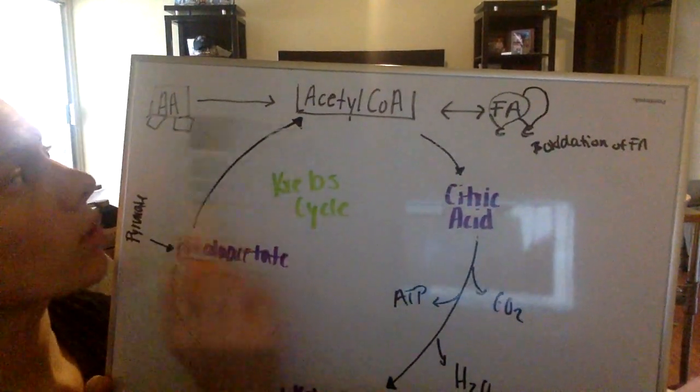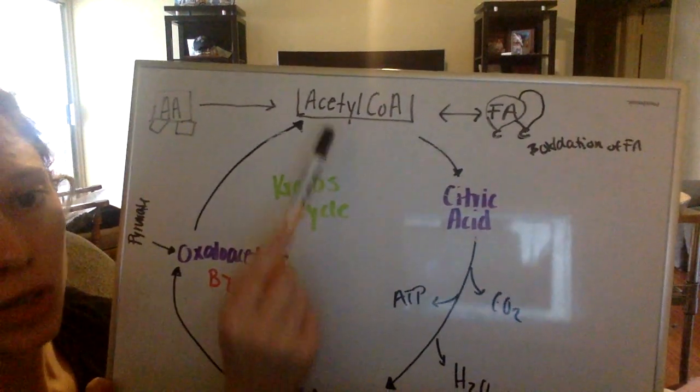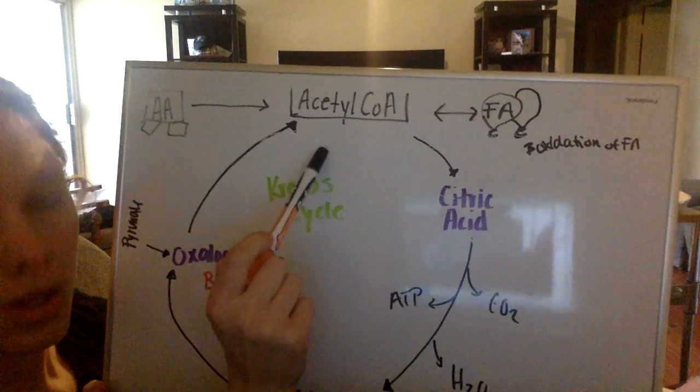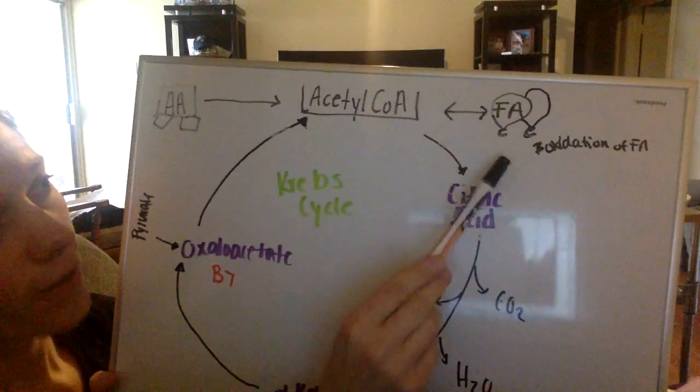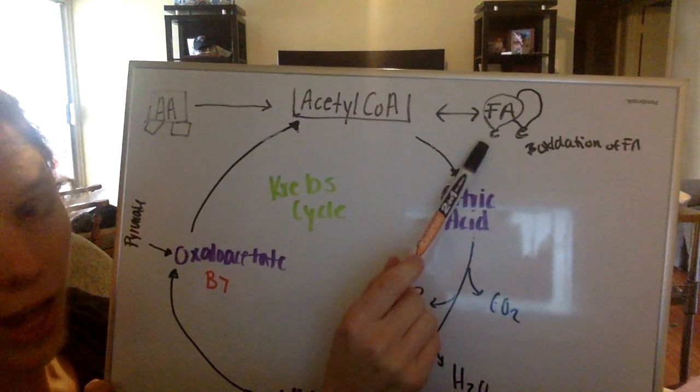So we have acetyl-CoA. We know amino acids can be made into acetyl-CoA, so we can get acetyl-CoA from proteins, from carbohydrates. We know that glucose and glycolysis brought us down here, and our fatty acids—I drew them as fat droplets or little balloons—they each have a carbon, so it's a two-carbon fragment.